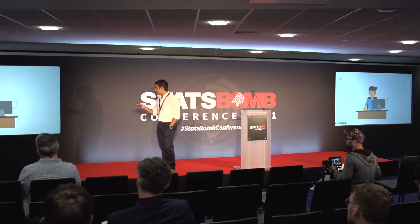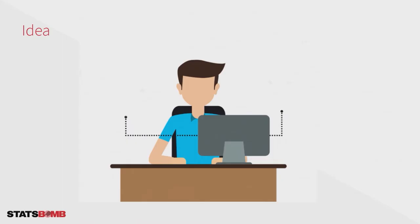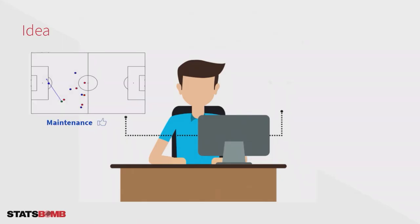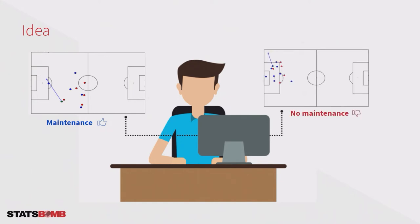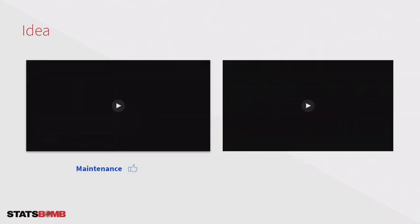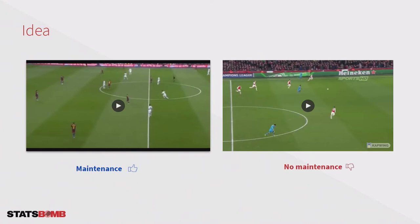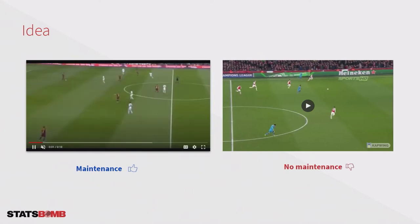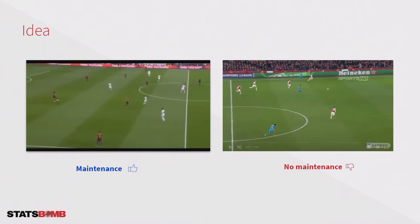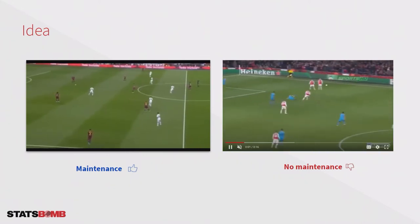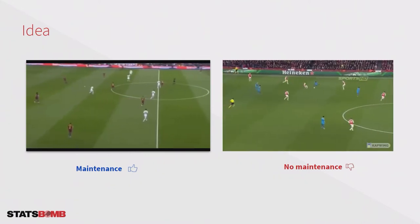Let me explain the idea. I want the specialist to sit in front of a computer and label some actions — for example, 'this is maintenance' or 'this is not maintenance.' With just a few examples, the idea is to build a model that is able to identify that this first video is clearly a maintenance phase and that the second possession is clearly a non-maintenance phase.